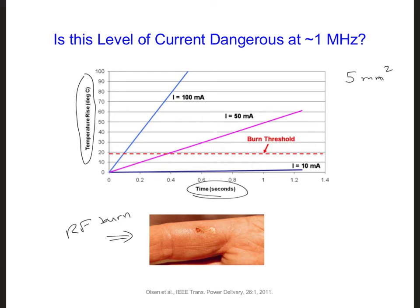In our case, for the 500 mA we are predicting at the midpoint of the crane, we can see that a current of 500 mA will have a very fast rise time in this plot, and it will easily get above the burn threshold in a short amount of time.